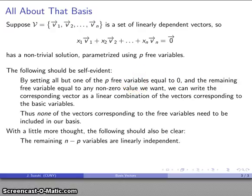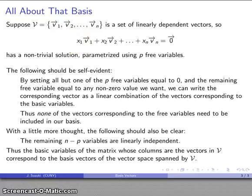With a little bit more thought, it should also be clear that the remaining variables have to be linearly independent. And again, that goes back to the idea that if this has any non-trivial solutions, then what we have is a set of linearly dependent variables. And that gives us a really nice result. Basic variables of the matrix whose columns are the vectors of v correspond to the basic vectors of the vector space spanned by v. So, our basic variables correspond to basis vectors.